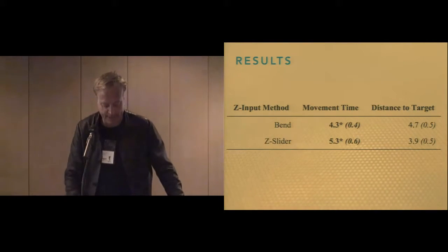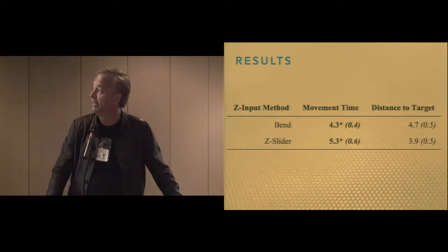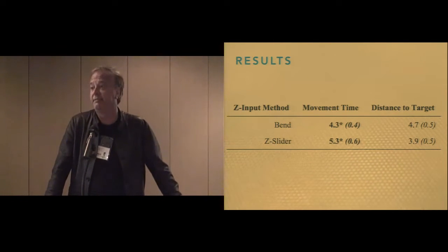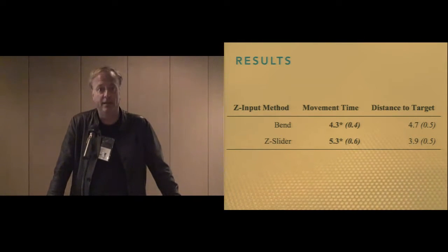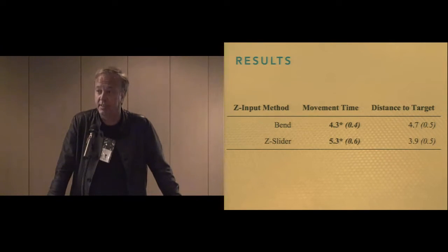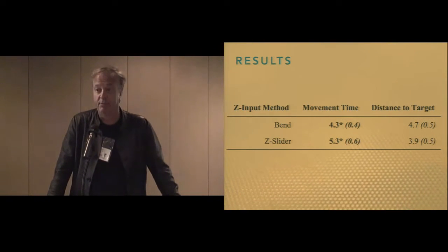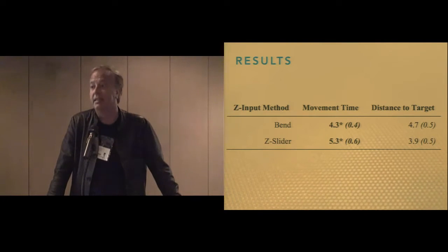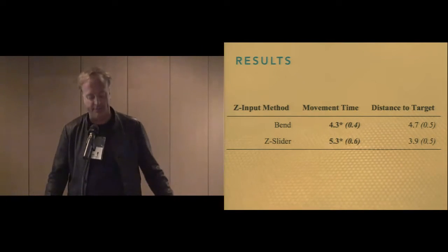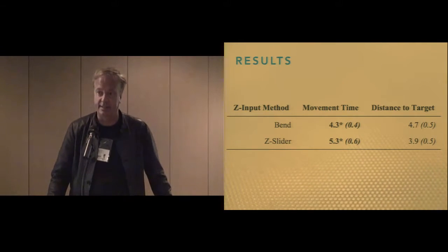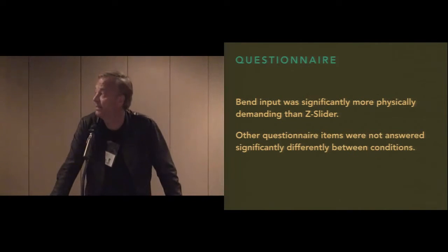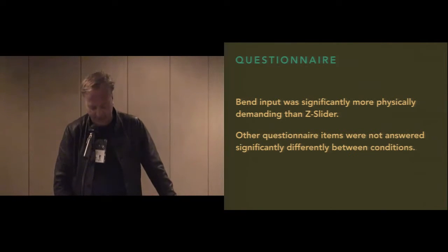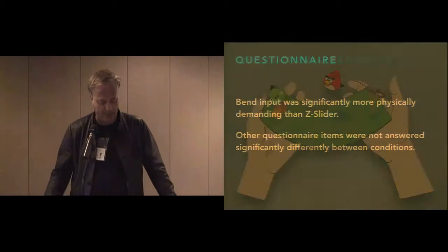Our hypotheses were that bend input significantly improves movement time over the Z slider, but that accuracy does not differ significantly. Results confirmed this — movement time was indeed significantly faster, about 24% faster in the bend condition, while distance to target trended to be less accurate for the bend condition, though these were not significant differences. There may be a movement time-accuracy trade-off, and it might be interesting to follow this up with a Fitts' Law study. Bend input was ranked significantly more physically demanding than the Z slider, but there were no other significant differences between questionnaire items.